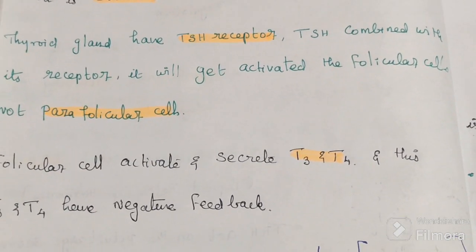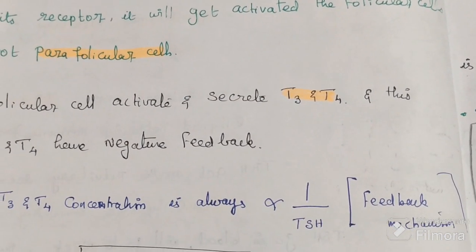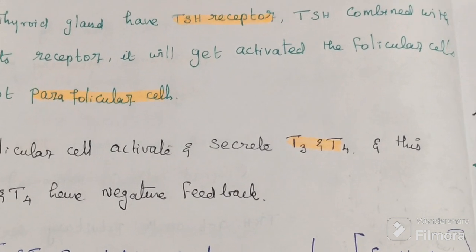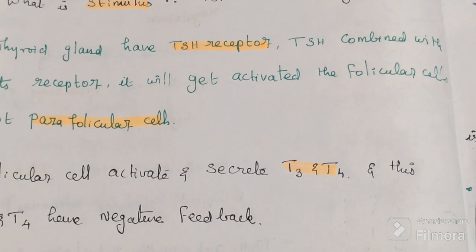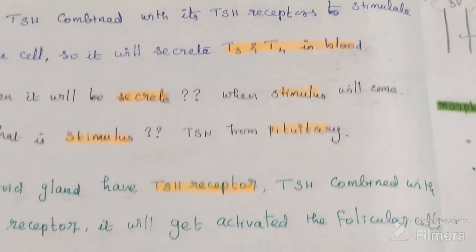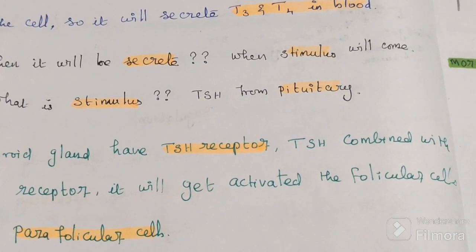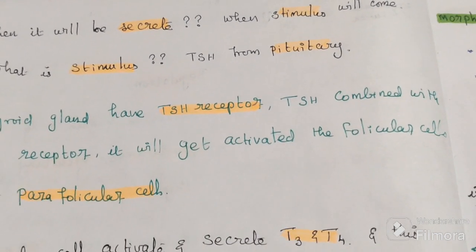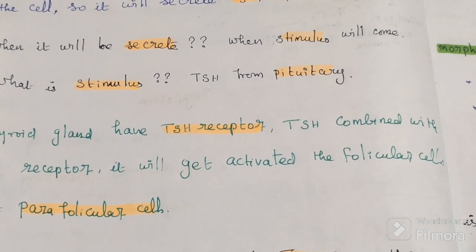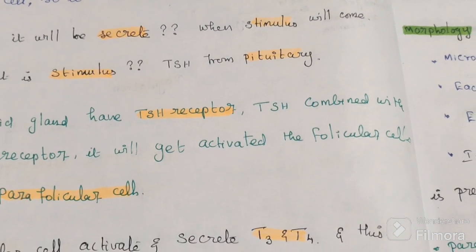When TSH from the pituitary combines with its receptor on the follicular cells, the cells get activated and secrete T3 and T4. So this is the regulation axis: hypothalamus secretes TRH into the blood, which goes to the pituitary. The pituitary secretes TSH, which travels to the thyroid gland. The thyroid gland has TSH receptors, which when activated stimulate the follicular cells — not parafollicular cells — to secrete T3 and T4.